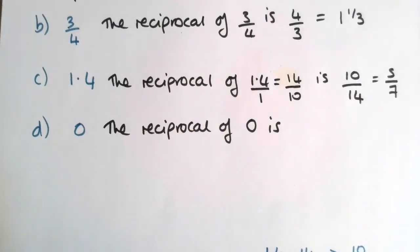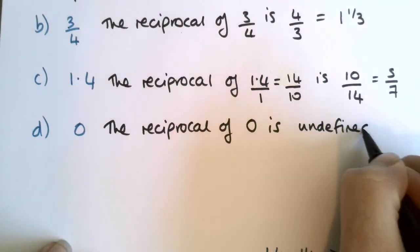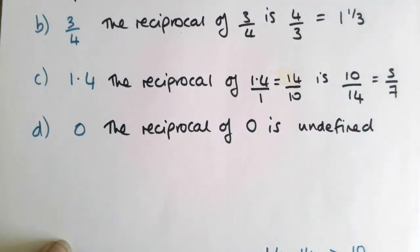And a sneaky one here at the end, 0, the reciprocal of 0 is, it's impossible. So we would write undefined there. So the reciprocal of 0 is undefined. You can't divide by 0, it just gives you infinity.